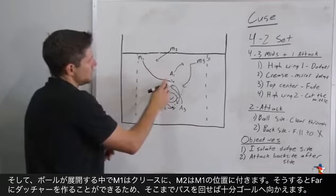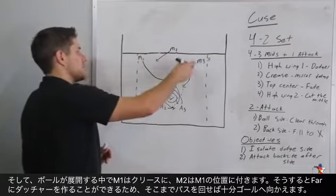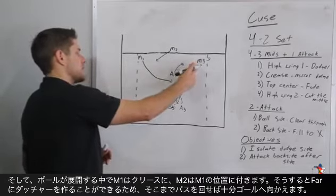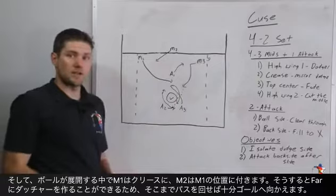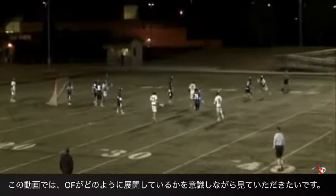After he mirrored out he kind of came back as the ball swings around the offense. The player who cut the middle stayed inside. The player who faded stayed out here and you actually get three consecutive dodges with this player and he ends up scoring on his third dodge. The purpose of this video is to show you how the offense can flow.